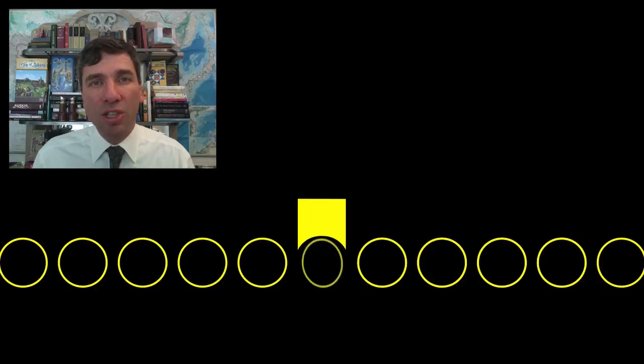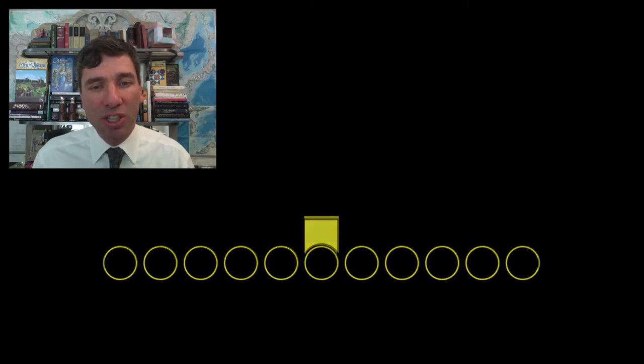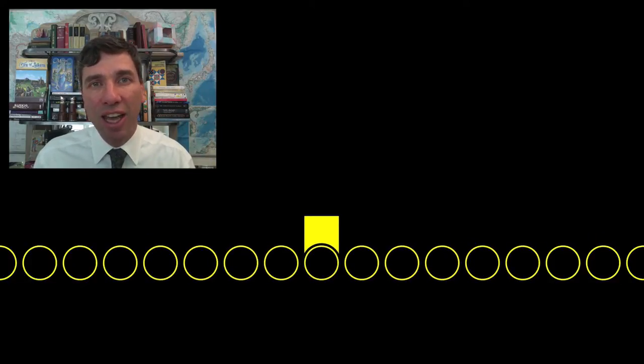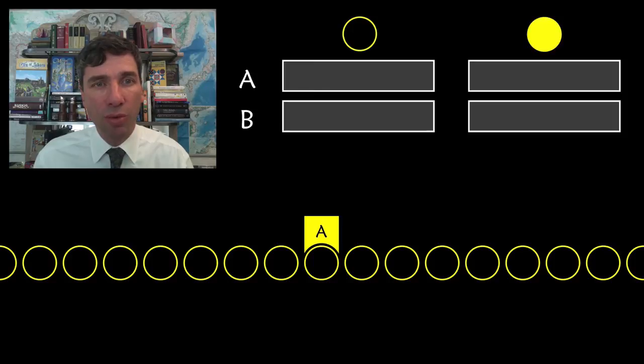We're also going to make sure that the head has got a state to it. So the state in our case is going to be either A, B, or C. We're going to start with A. And lastly, we're going to have a set of rules for that head to follow. And so here are the rules. They're going to be written in those four boxes.